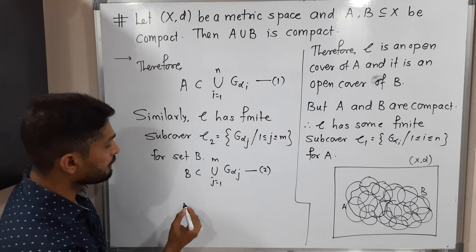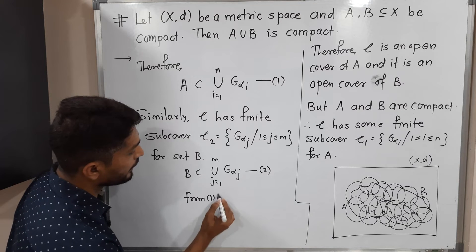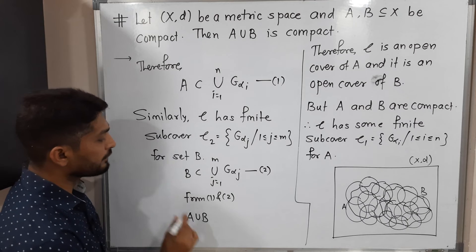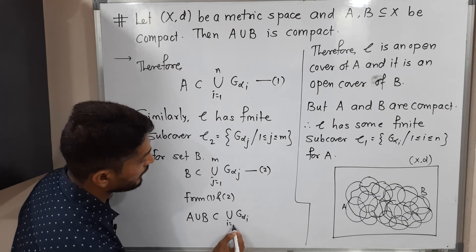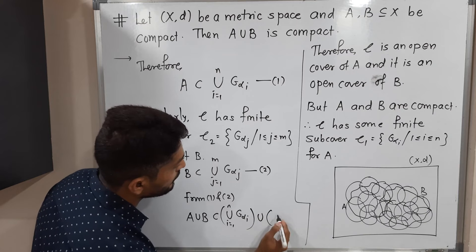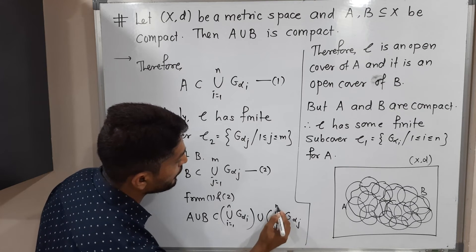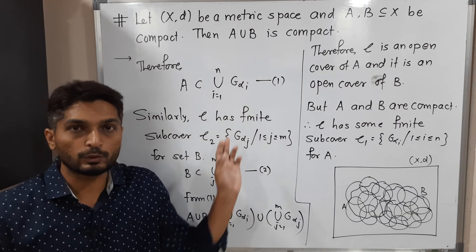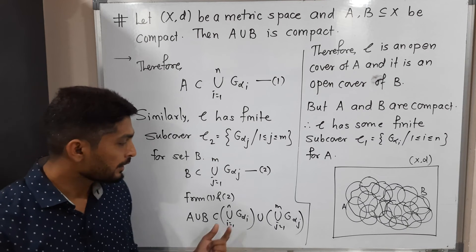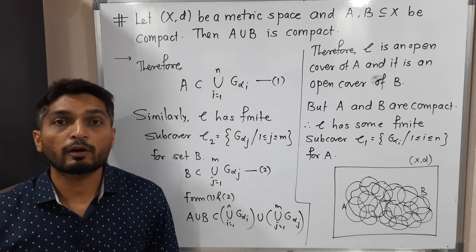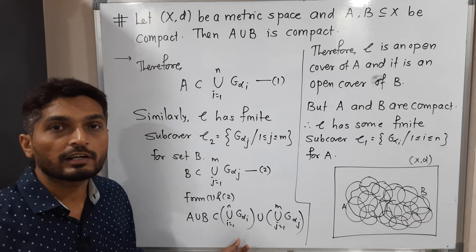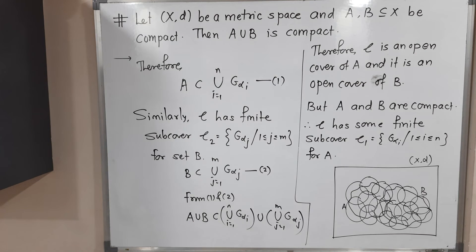From equations (1) and (2), we can write: A∪B ⊆ (∪G_αi, i=1..n) ∪ (∪G_αj, j=1..m). In the first bracket we have n sets, in the second bracket we have m sets, so in total we have n + m sets — a finite number of sets whose union covers A∪B. That is a very important conclusion.